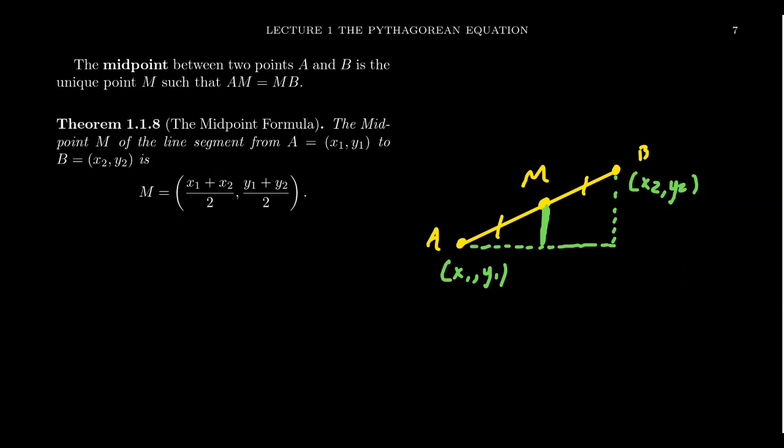And similarly, the Y-coordinate of the midpoint is just going to be halfway between the Y-coordinate of A and the Y-coordinate of B. That is, this side right here cuts in half, and these two segments are exactly the same. Therefore, we can find the Y-coordinate by averaging together the Y-coordinates of A and B. That is, the Y-coordinate of the midpoint is Y1 plus Y2 all over 2.